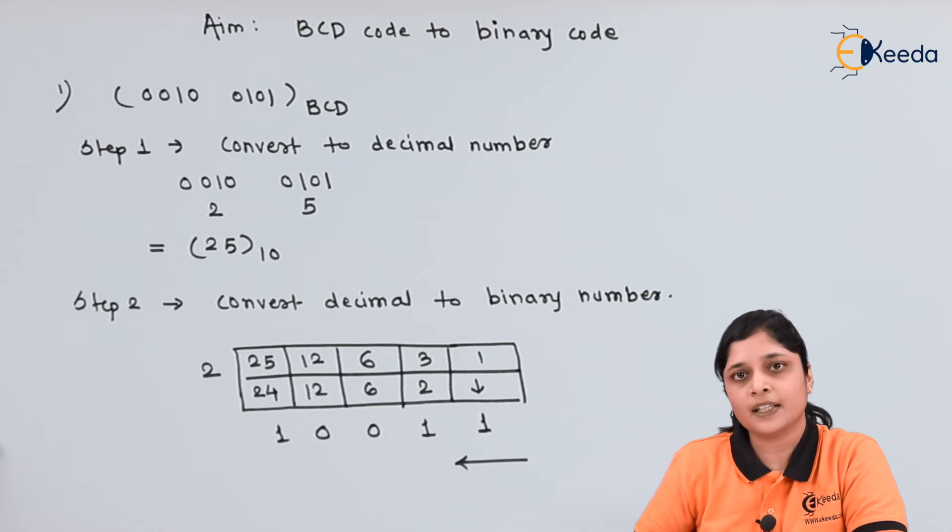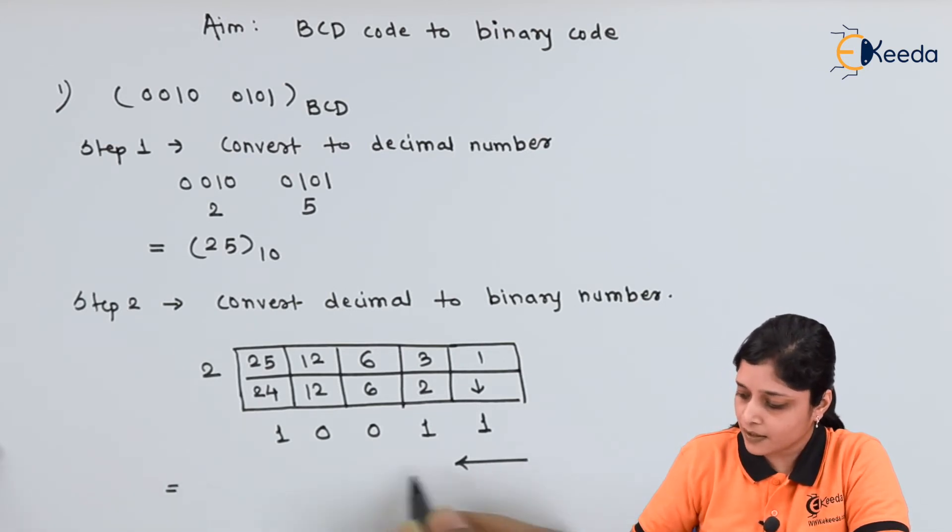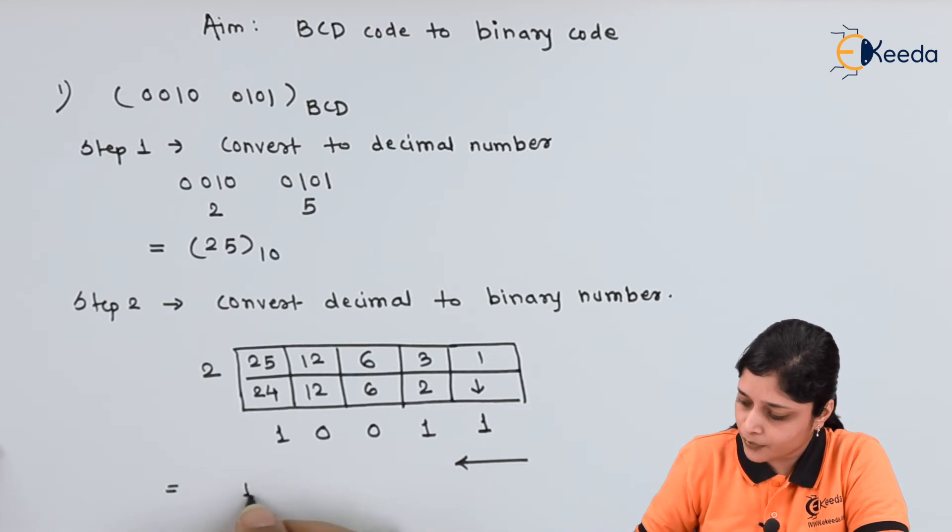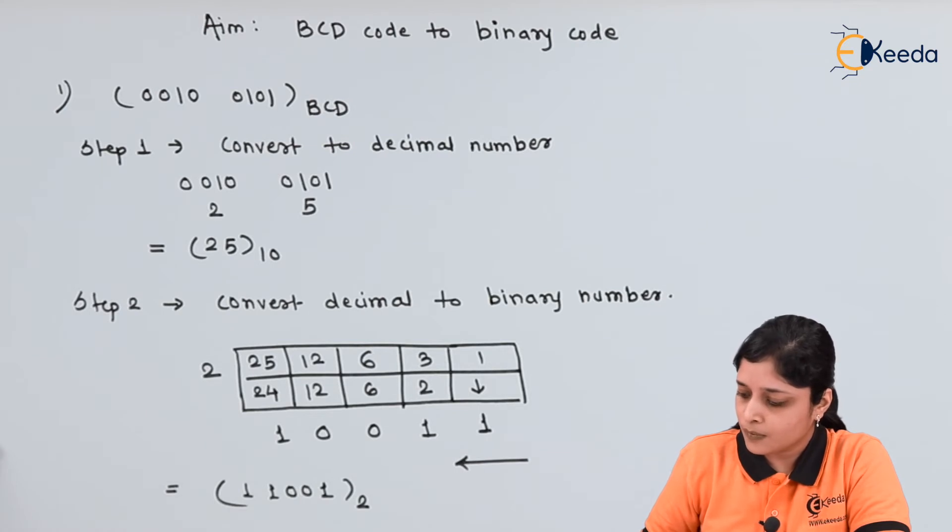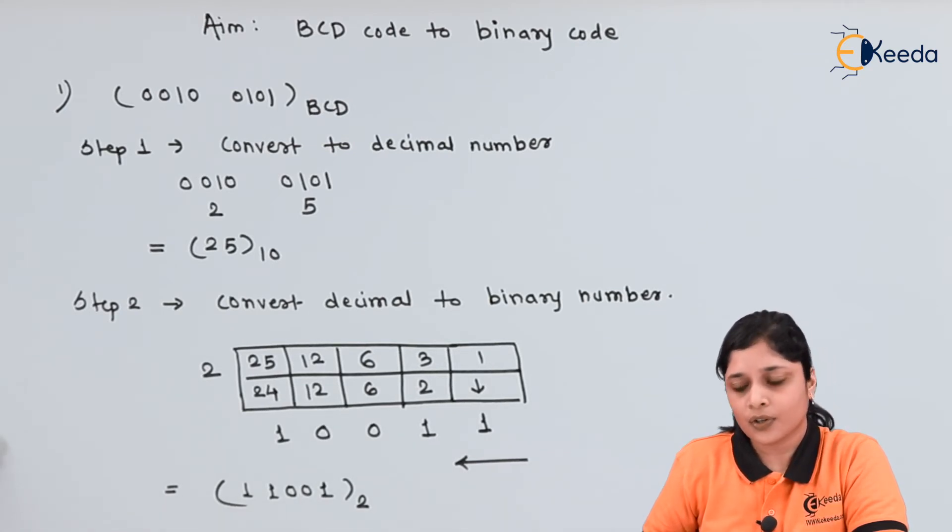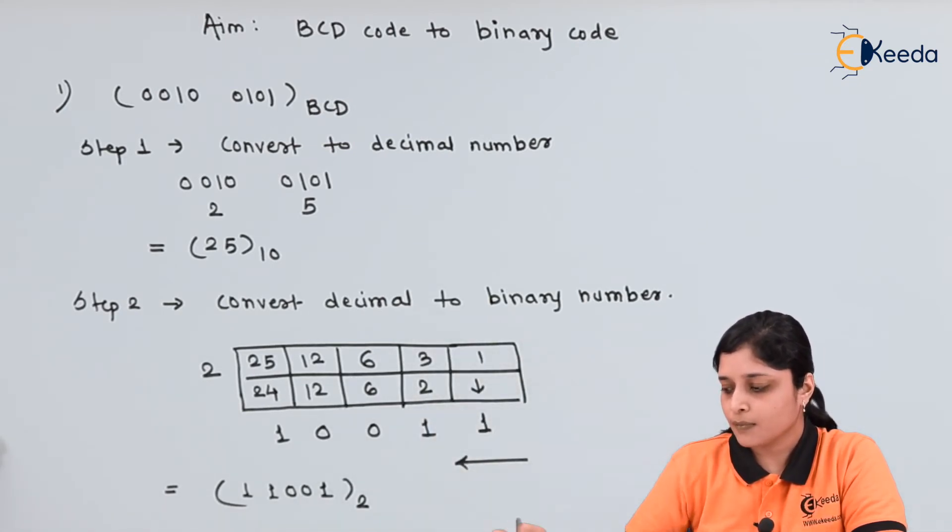And for writing the final answer, always you have to draw this arrow and start writing from right to left. 11001 to the base 2 is the answer for conversion of decimal to binary.